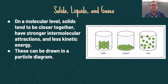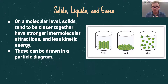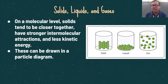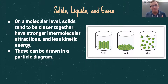Let's talk about solids, liquids, and gases on a molecular level. Solid molecules tend to be much closer together and have stronger intermolecular forces, stronger attractions, and therefore less kinetic energy — they're less able to move around. Liquids tend to have weaker intermolecular forces and higher kinetic energy. Gases have virtually no intermolecular forces and have the highest possible kinetic energy, randomly moving around. These different states of matter can be drawn in a particle diagram: solid molecules close together, liquids a little further apart, and gases moving around everywhere.